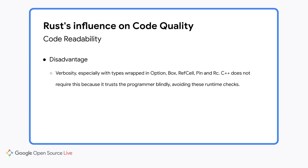Nonetheless, Rust was more verbose in a few places, especially when some domain type was wrapped in Option, Box, RefCell, Pin, or RC. This means that not only are the types longer, but it also leads to verbosity in code that uses them, because we need to explicitly unwrap some of these types. We need to call borrow or borrow_mut to get the value contained in a RefCell, and call unwrap to access the value inside an Option that you know must be present. C++ does not require any of this, because it trusts the programmer blindly, avoiding these runtime checks.